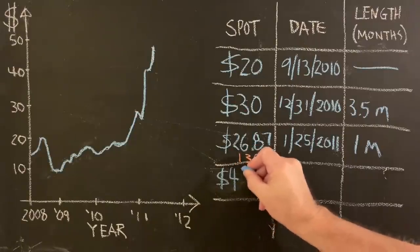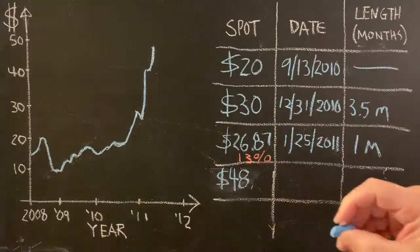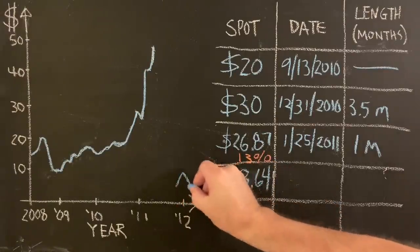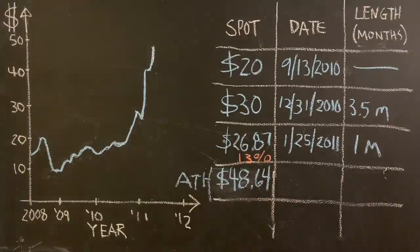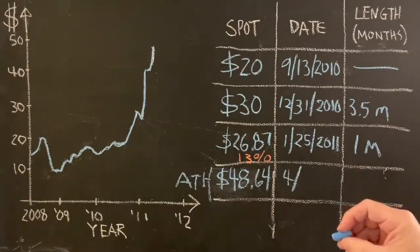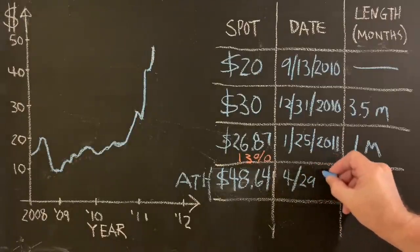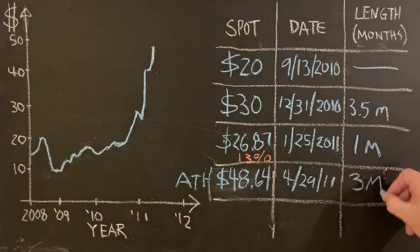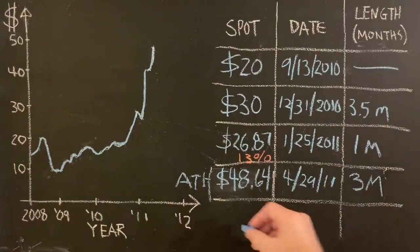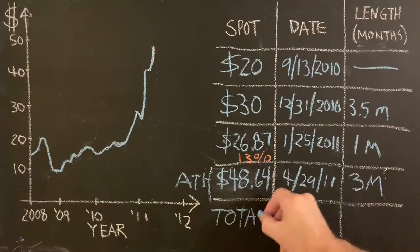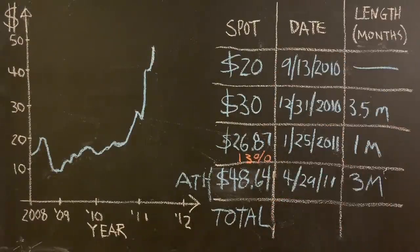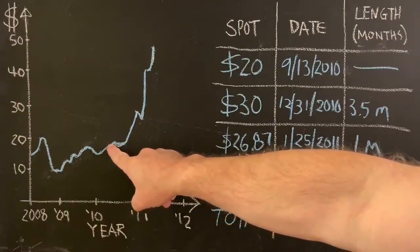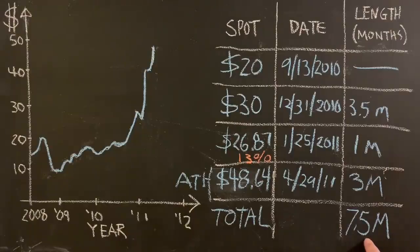And then the all-time high, $48.64. All-time high. And that was April 29th. And that was another three months. So in total, we covered all that ground from 20 to 48 in seven and a half months. So from 20 to all-time high in seven and a half months.